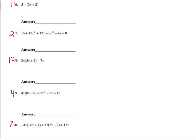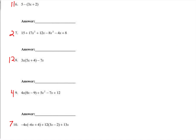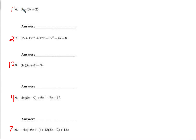Number six on the A quiz and number 11 on the B. This one gave probably the most people trouble. The most common thing I saw was to distribute this five in some way, whether as a positive five or a negative five.